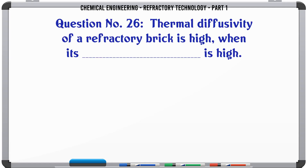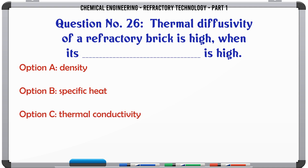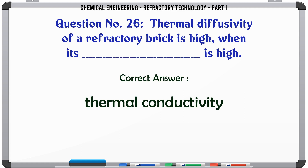Thermal diffusivity of a refractory brick is high when its ___ is high. A. Density, B. Specific heat, C. Thermal conductivity, D. None of these. The correct answer is Thermal conductivity.